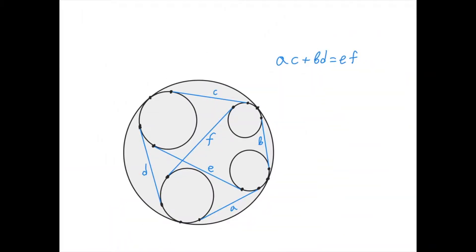The second thing to note is that Casey's theorem is also true in the reverse direction. Suppose we have four circles, we draw their common tangent lines, calculate the distances A, B, C, D, E, and F, and they happen to satisfy AC plus BD equals EF. Then either there exists a circle that touches all four circles internally, or there exists a circle that touches all four circles externally. We don't know which one is true, but at least one of these two statements must hold.